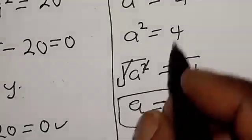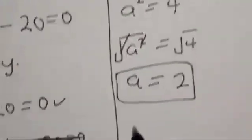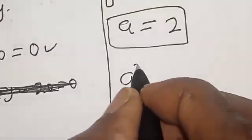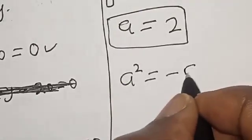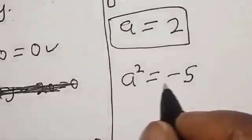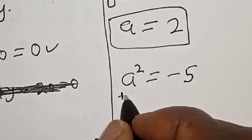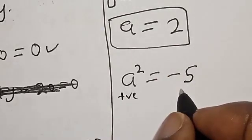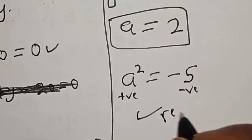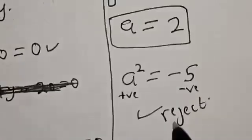For the second case, a^2 = -5. But this exponential equation cannot take the negative. A square is positive, and this is negative. Therefore we reject this because it's a false statement.